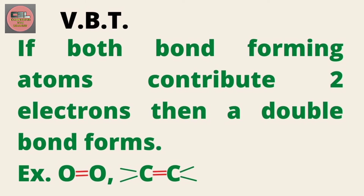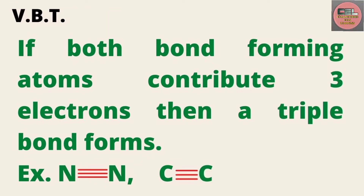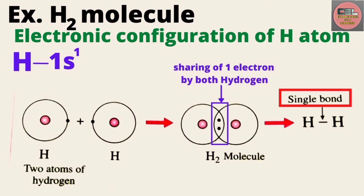According to this theory, if bond-forming atoms share one electron each, then a single bond forms. If they share two electrons each, then a double bond forms. If they share three electrons each, then a triple bond forms. Triple bond is the highest studied in chemistry.